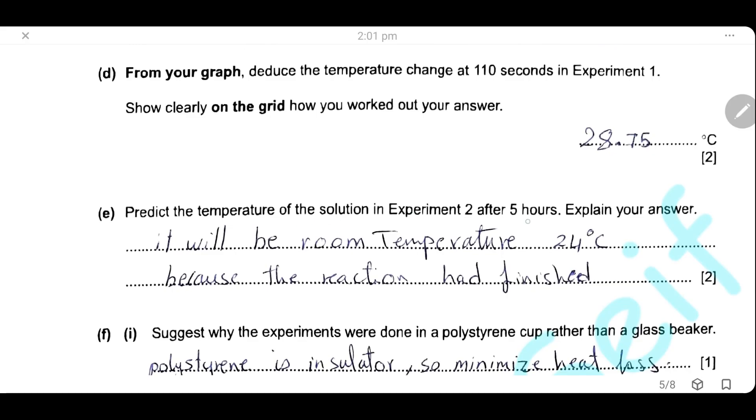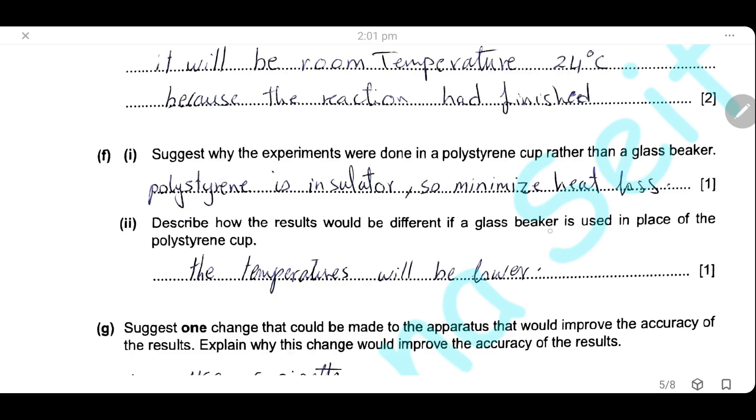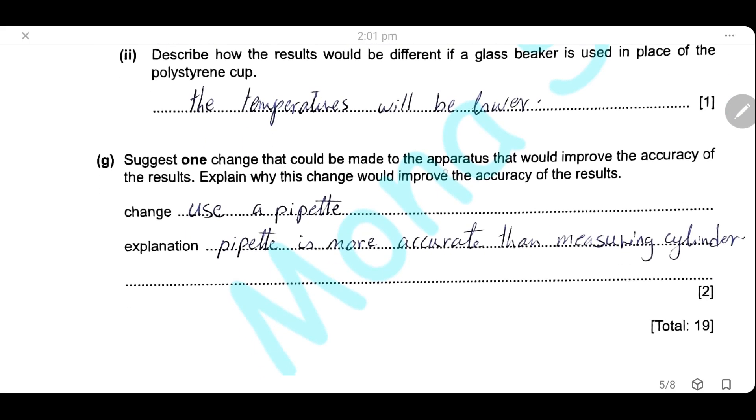Predict the temperature of the solution in experiment 2 after 5 hours and explain your answer. After 5 hours, the reaction has finished, so the temperature will be the same as the room temperature, which was 24°C. Suggest why the experiments were done in a polystyrene cup rather than a glass beaker. The polystyrene cup is an insulator, so we should use it to minimize the heat loss. Describe how the results would be different if a glass beaker is used instead of a polystyrene cup. The glass beaker is not an insulator, so some of the heat will be lost to the surroundings and all our temperature readings will be lower. Suggest one change that could be made to the apparatus that would improve the accuracy of the results. We could use a pipette to measure the 25 cm³ of the copper sulfate solution so that the pipette is more accurate than the measuring cylinder and our readings will be more accurate.